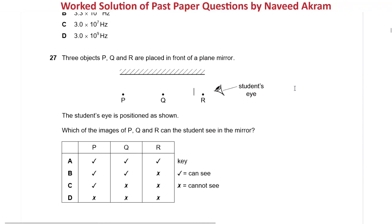Assalamu alaikum, welcome to the video series of past paper questions of O-level Physics 5054. In this video we'll discuss Paper 1 questions related to the topic reflection of light. To get the most out of this video, you should try to solve each question yourself first — read the question, pause the video, think about it, try to solve it, and then resume the video to see whether your approach is right or wrong.